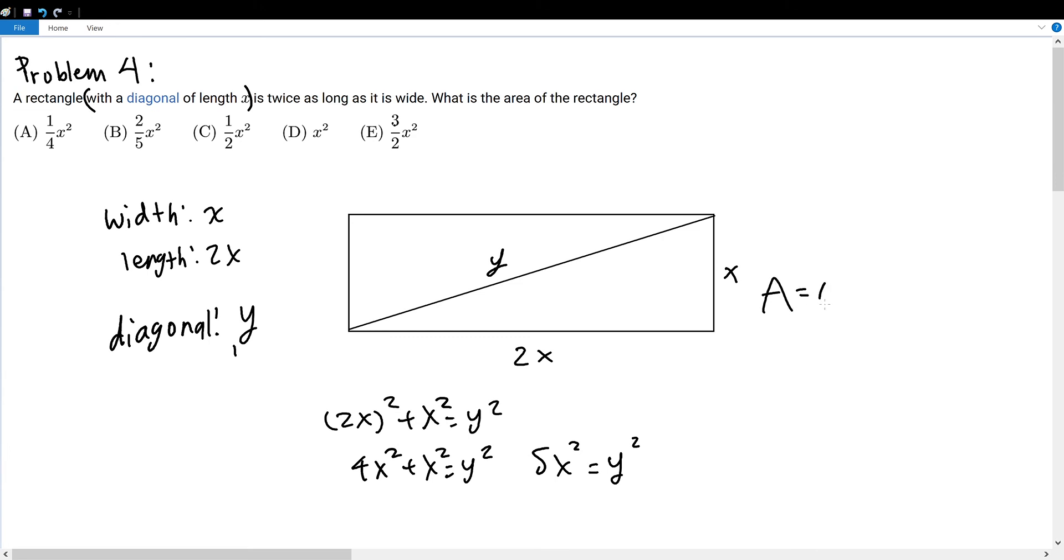The area of this rectangle is the length times width, which is 2x times x, which is 2x². We can find x² in terms of y². x² will be equal to 1/5 y².